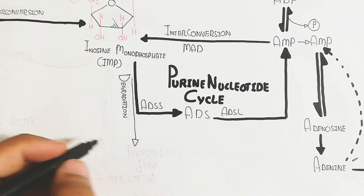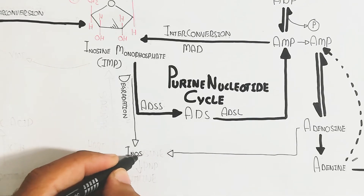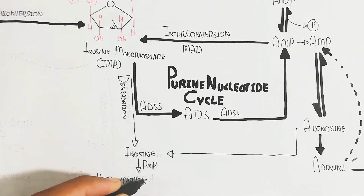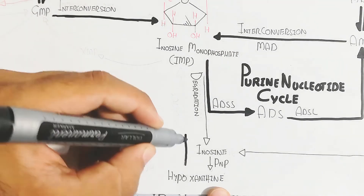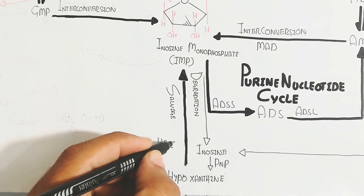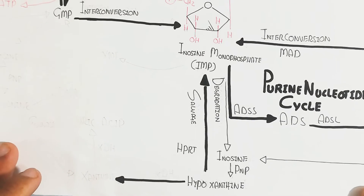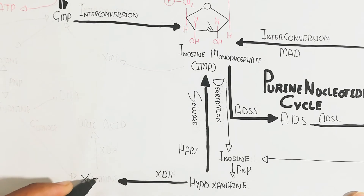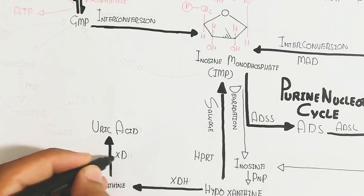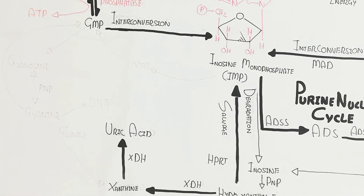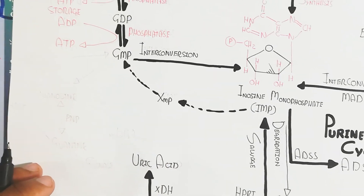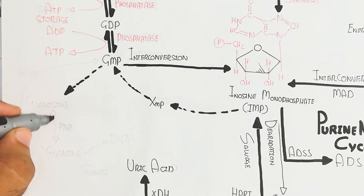IMP (inosine monophosphate) is degraded into inosine via the PANP enzyme, which also produces hypoxanthine from adenosine. Hypoxanthine can be recycled back into IMP through the salvage pathway via HPRT. The enzyme xanthine dehydrogenase (XDH) converts hypoxanthine into xanthine, and xanthine is further converted into uric acid. Excessive uric acid can cause stone formation.